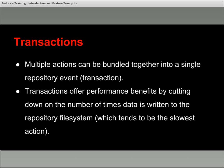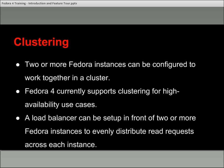A word about clustering: setting up multiple Fedora instances and linking them together. Clustering can be done for various reasons. Currently, Fedora 4 supports clustering for high availability use cases — making sure that when people access the repository, performance is consistent, and that if one of the nodes goes down, traffic will be redirected to another node and visitors won't notice. You can set up a Fedora cluster with a load balancer in front so read requests are distributed evenly between instances, and failover is supported as well.